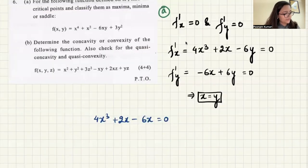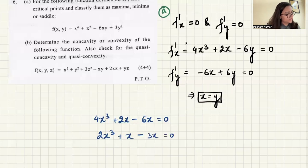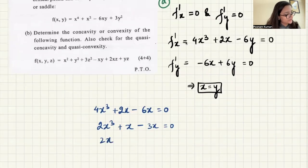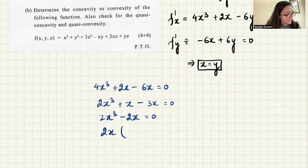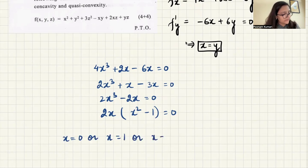Taking 2 common: 2x³ + x − 3x = 0, which simplifies to 2x³ − 2x = 0. Taking 2x common gives 2x(x² − 1) = 0. This will be zero when x = 0, or x = 1, or x = −1.